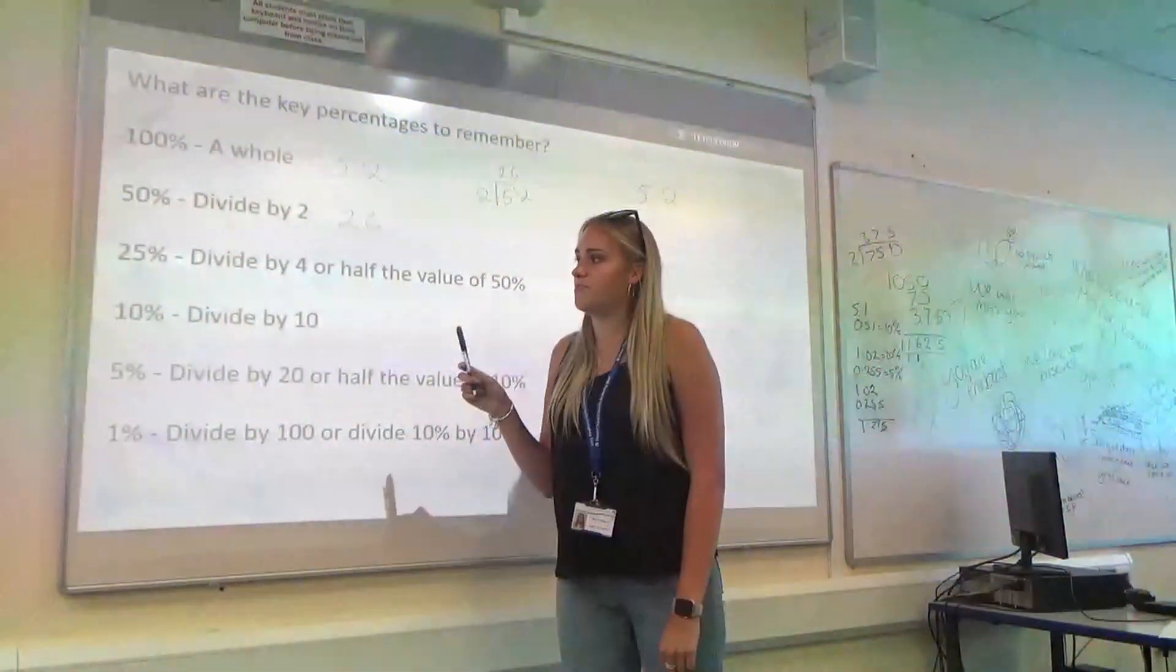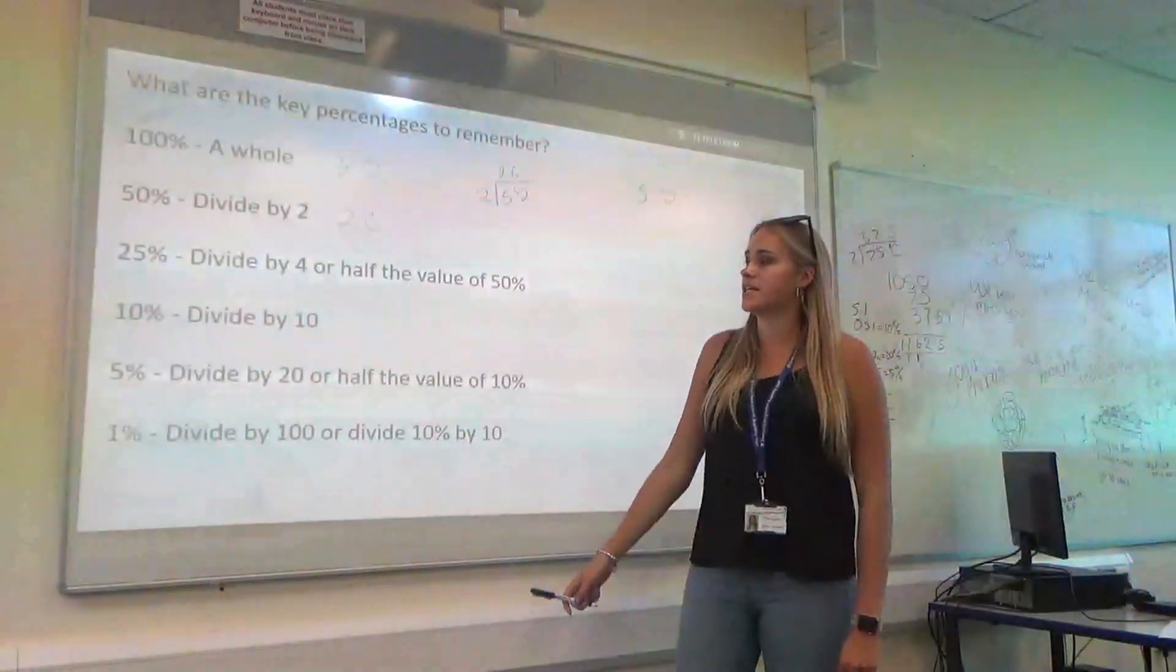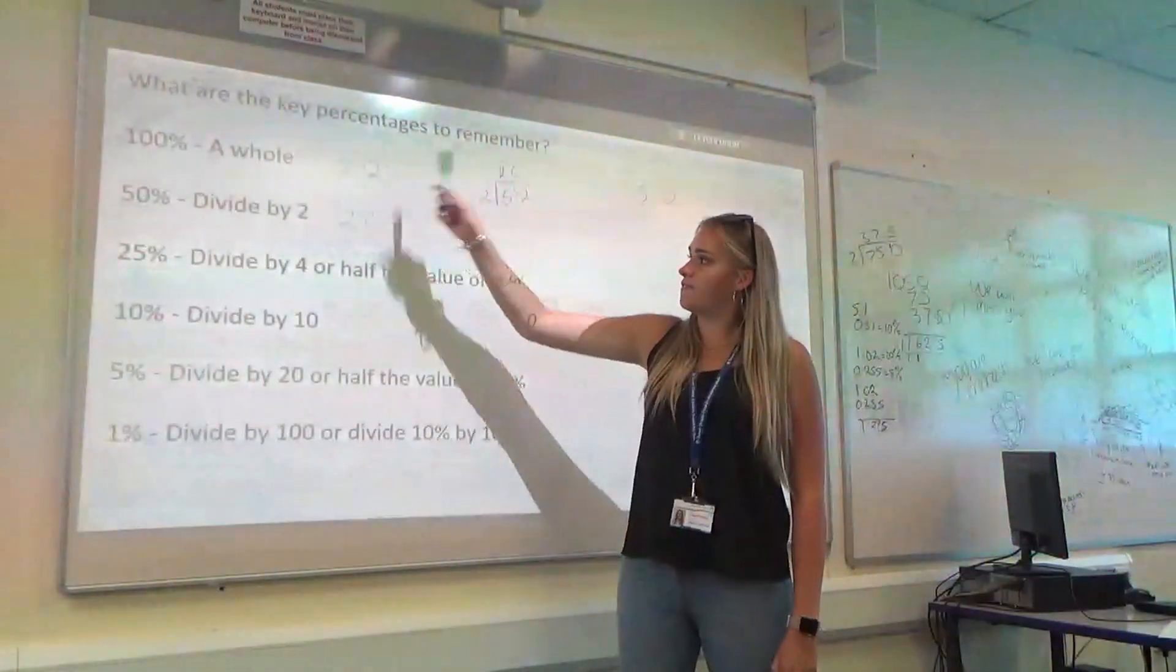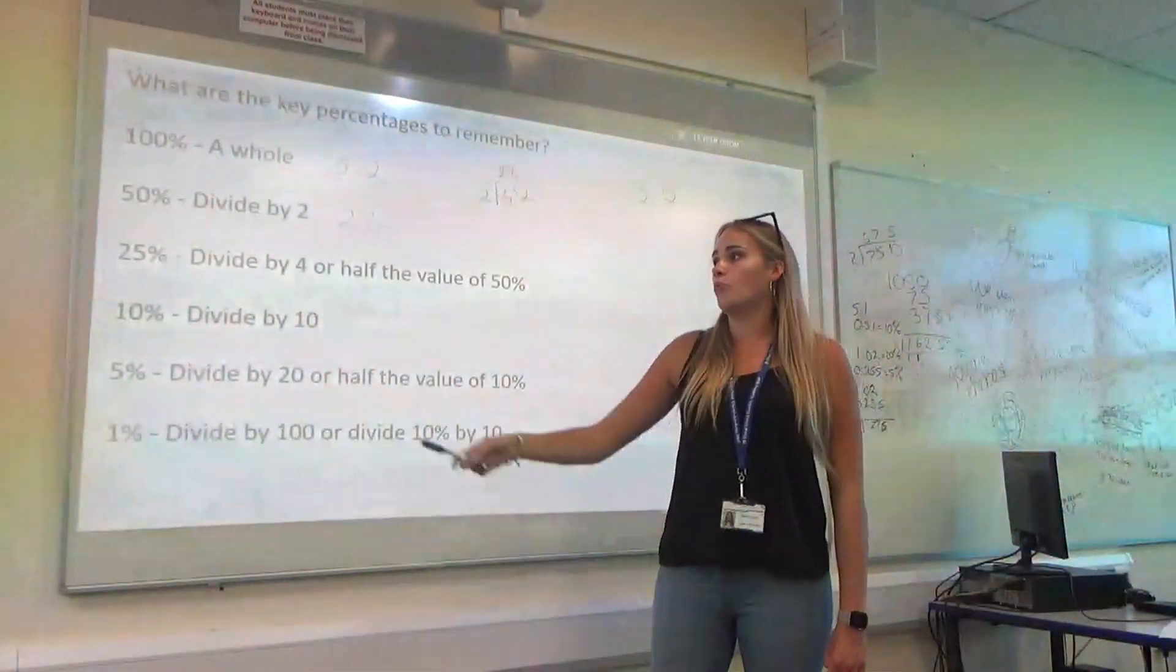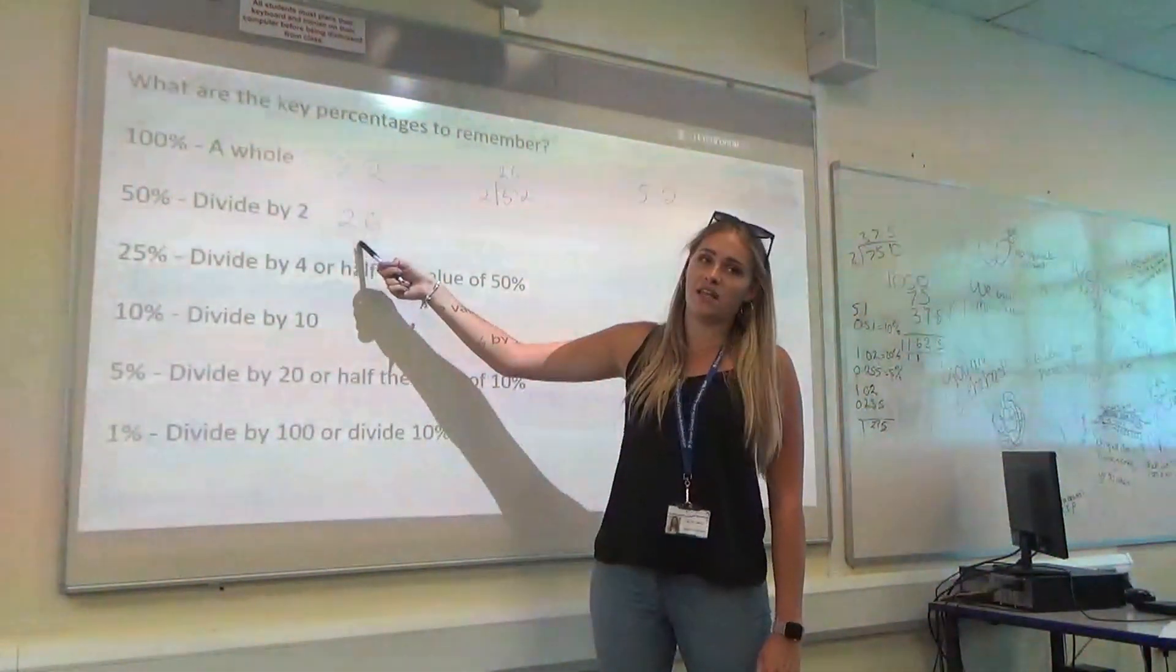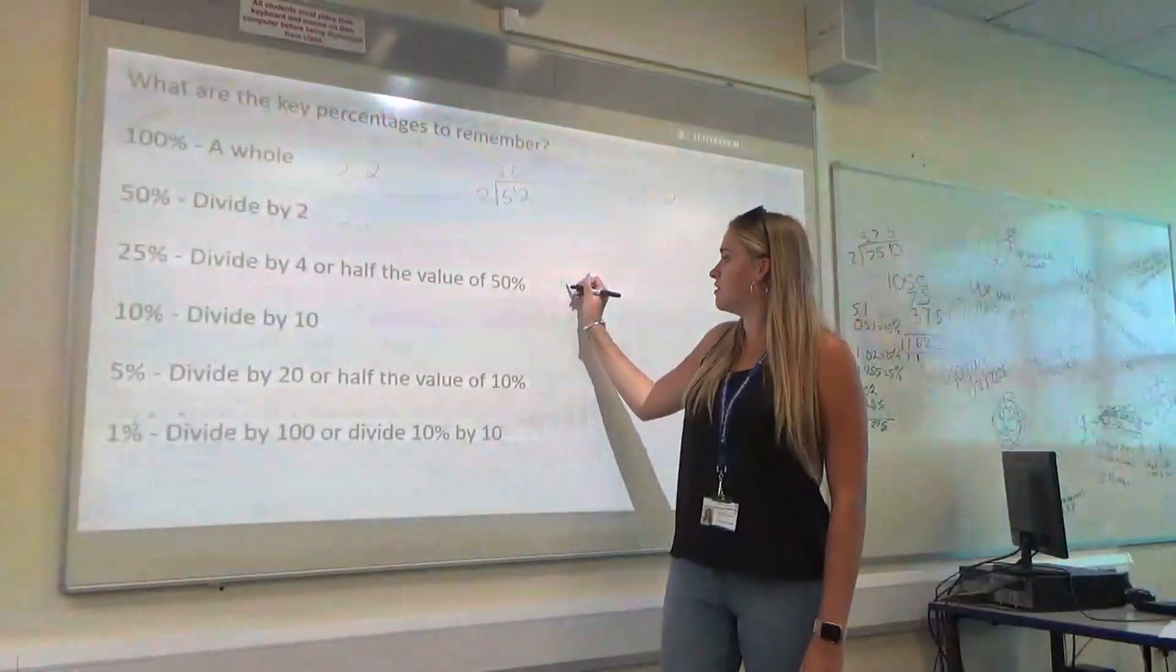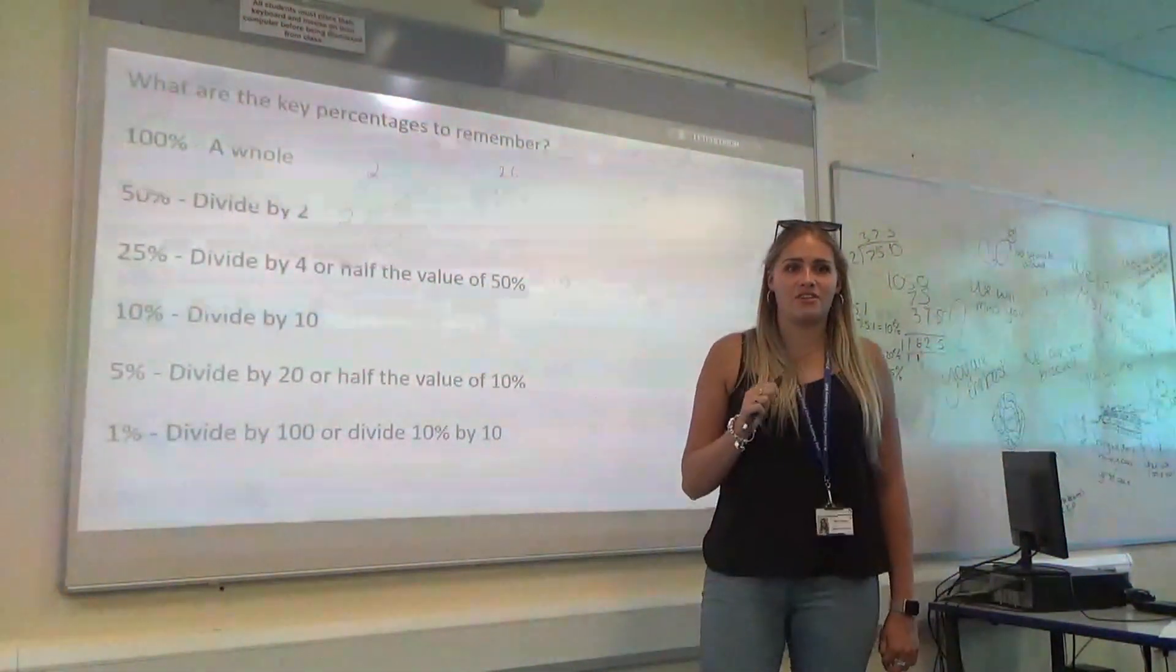If we're going to get 25%, there are two ways of doing this. We can either divide 52 by 4. Or, because we've already worked out 50%, we just need to half that again. So, we're going to get our 13.